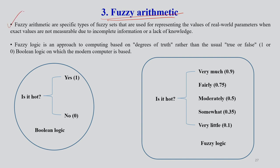Fuzzy arithmetics are specific types of fuzzy sets used for representing values of real-world parameters when exact values are not measurable due to incomplete information or lack of knowledge. Fuzzy logic is an approach to computing based on degrees of truth rather than the usual true or false cases - Boolean logic, 1 or 0. Instead, fuzzy logic works on the basis of degrees of truth.